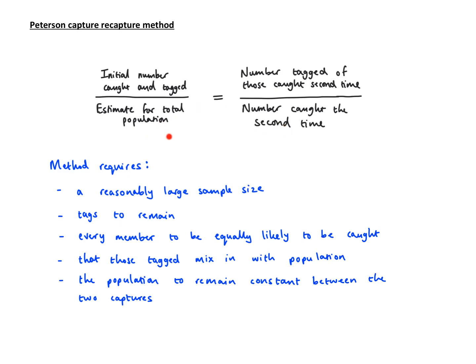I've written out the formula for Peterson Capture-Recapture method. Instead of capital M, capital N, lowercase m, lowercase n, I wrote down what they stand for. I'm going to describe it as the equality of two fractions. The second fraction is the number that are tagged the second time over the total number caught the second time. The first fraction has those initially caught and tagged at the top, and at the bottom is the estimate for the total population, which is what we're normally finding.